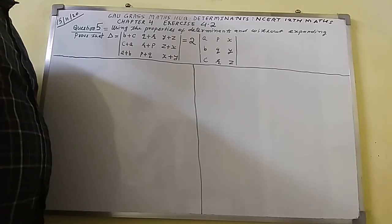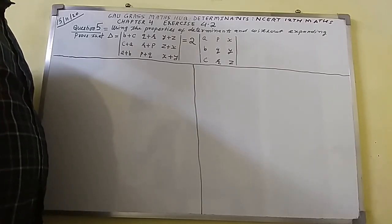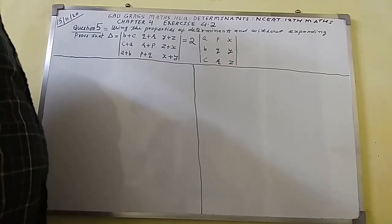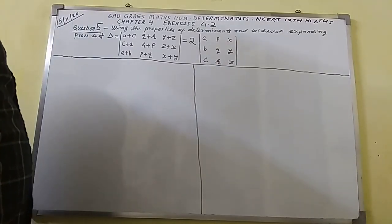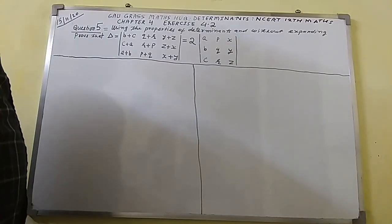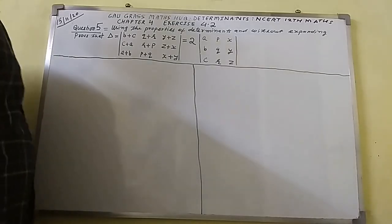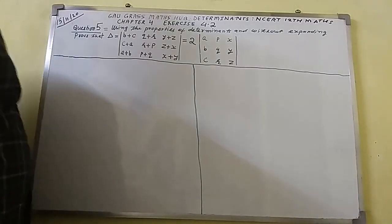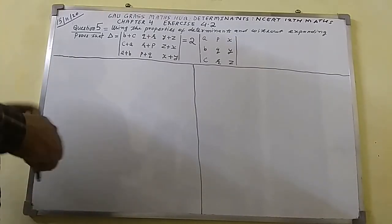The RHS determinant has elements of the first row: A, P, X; second row: B, Q, Y; third row: C, R, Z. This is the question I am going to discuss here.